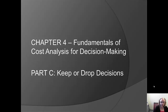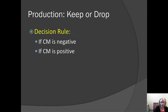Part C of Chapter 4 has to do with what's called a keep or drop decision. Often a company has several product lines and the boss notices that one of the product lines is significantly less profitable than the others — sometimes one line is even unprofitable. The question is: would the firm be better off keeping or dropping that unprofitable product line?